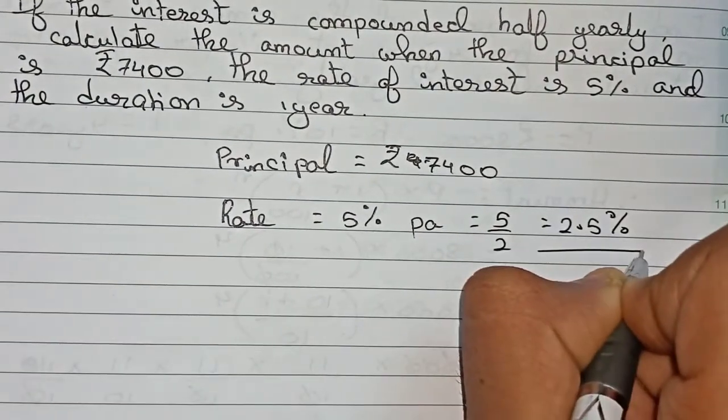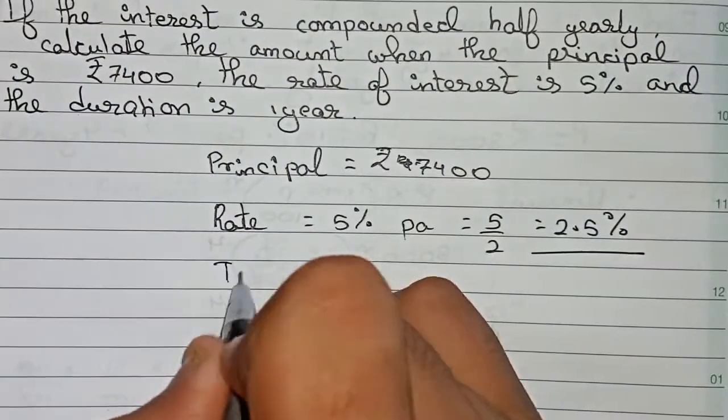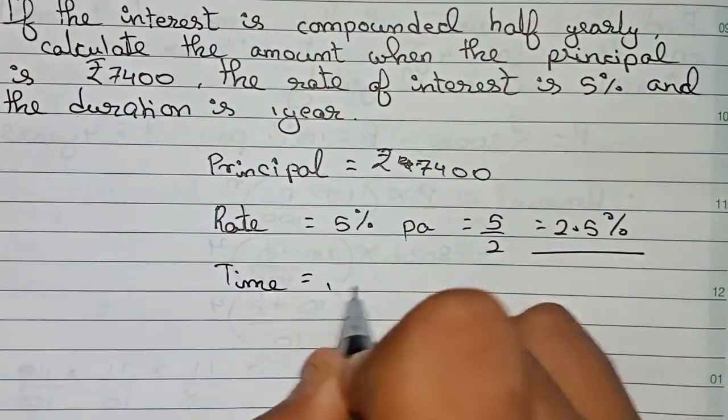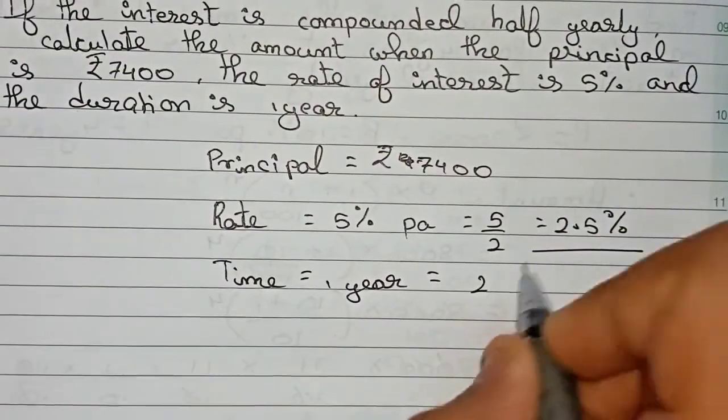The time is equal to 1 year. One year means 2 half years: six months plus six months, so it is equal to 2 half years.